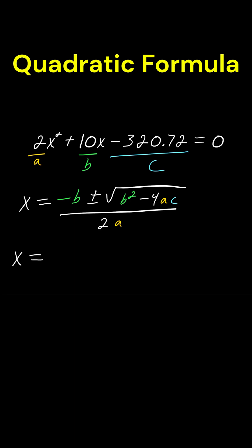x equals negative b. Negative b would be negative 10 plus or minus the square root of 10 squared, which we can simplify this already. 10 squared is going to be 100, we already know that, so write in 100